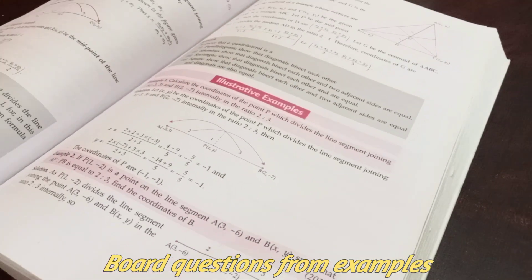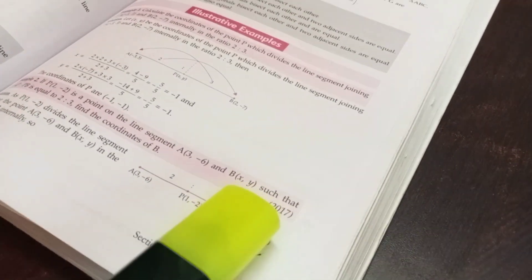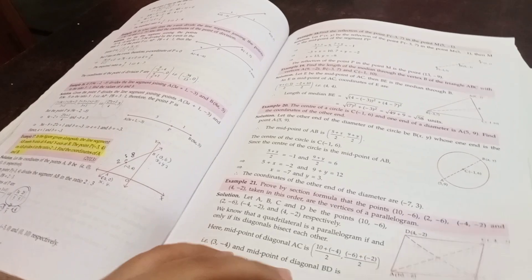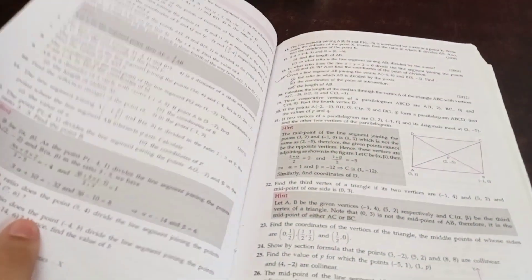So I started up with section formula. Like I did all the board questions from the examples. Just open your book, you will be able to see the examples where the year is written along with the question. So you make sure that you have to do those. By the way, I practice only the examples which are the board questions.